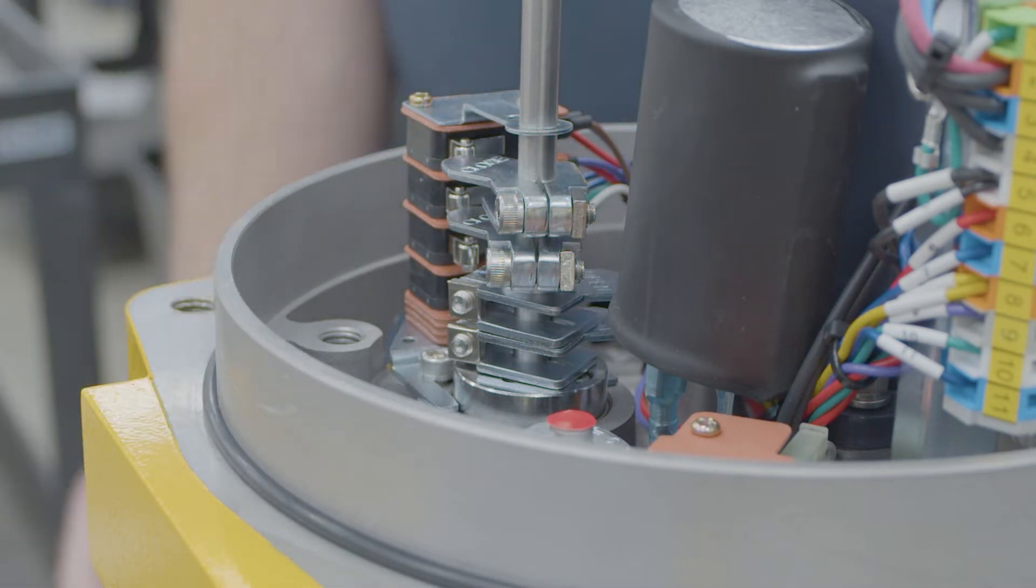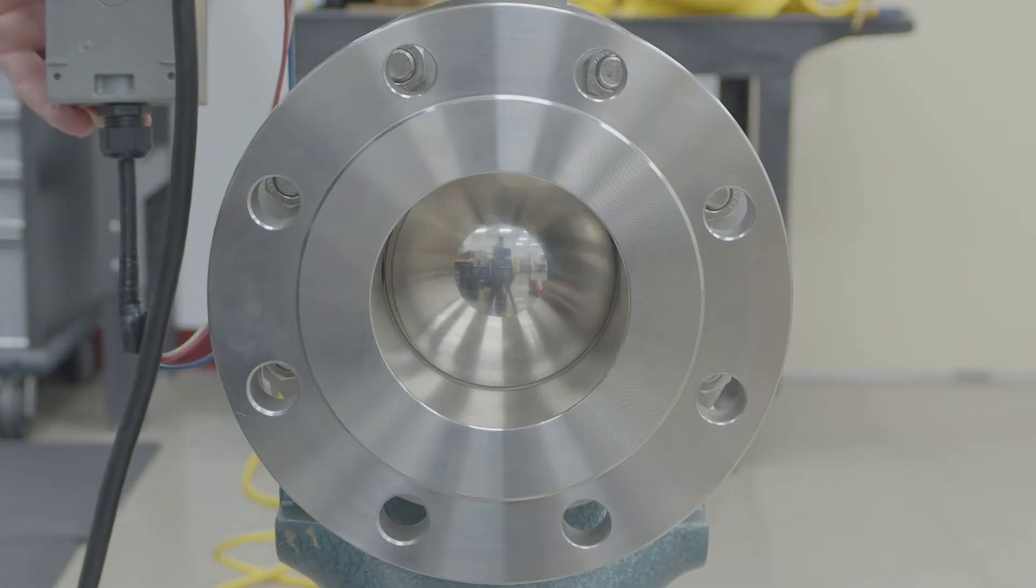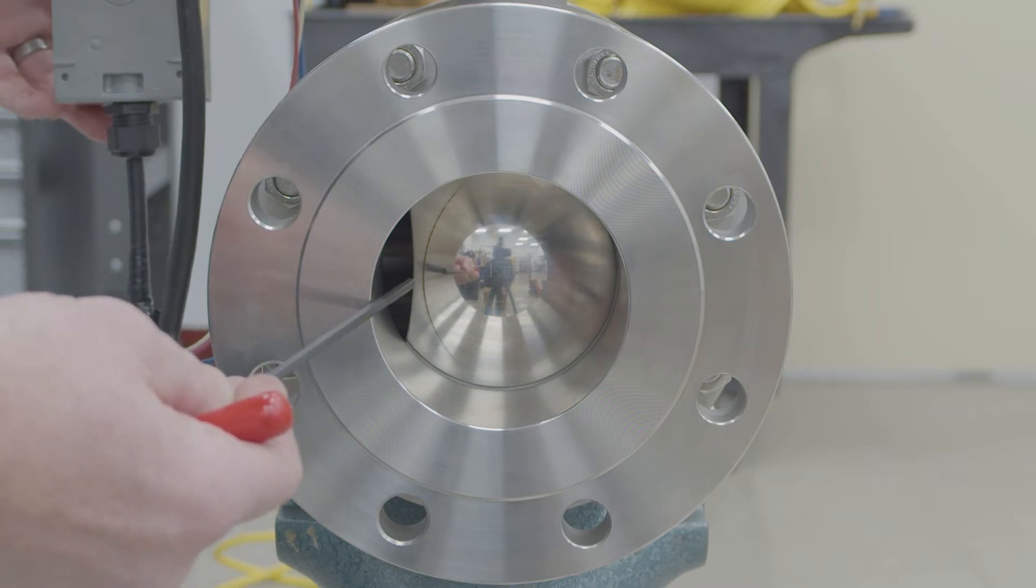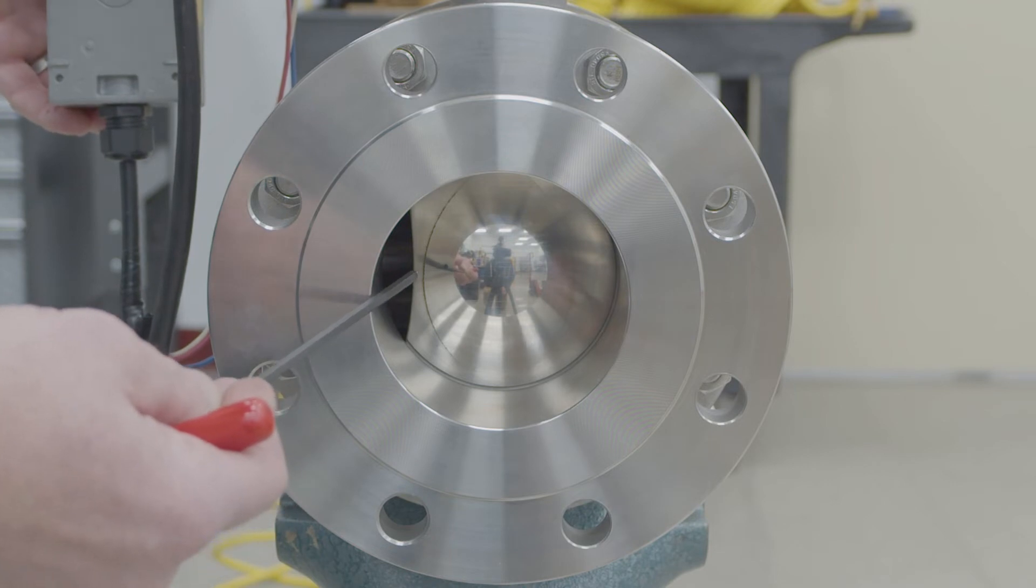So first thing you do is look to see where it's at. And you're going to look for like a dirt line on the ball that will show you how much your seating area is. So that tells you you have, you know, roughly three sixteenths of an inch of seating area. So that is good on a four inch size valve.